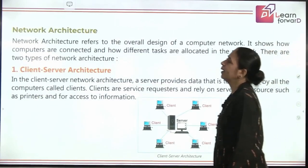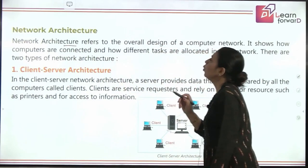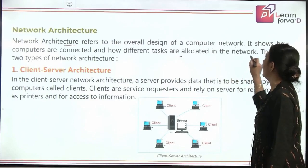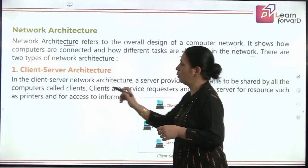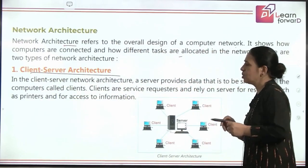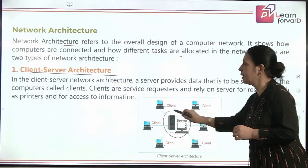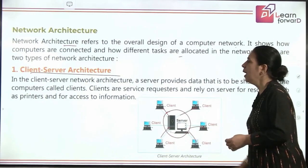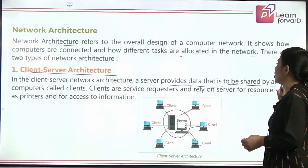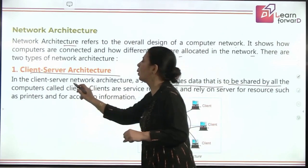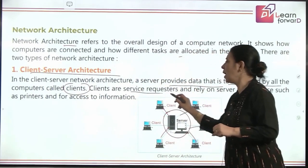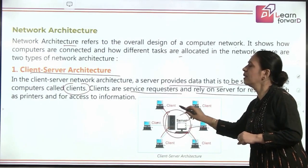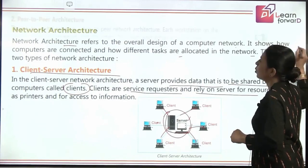Coming to network architecture, it refers to the overall design of a computer network, showing how computers are connected and how different tasks are allocated. There are two types. The first is client-server architecture, where a central authority is given to the server and different clients are attached to it. The server provides data to be shared by all the sub-computers, called clients. Clients are just service requesters and rely on the server — if the server is not working, clients cannot access any information.